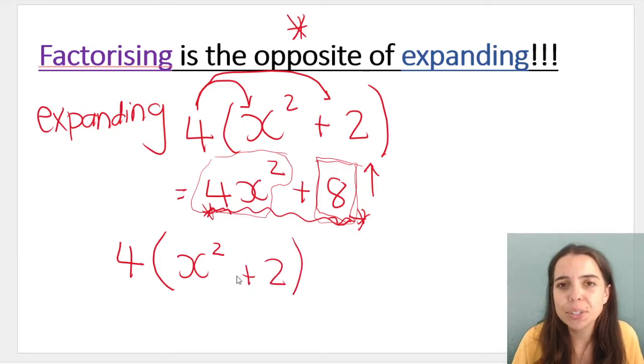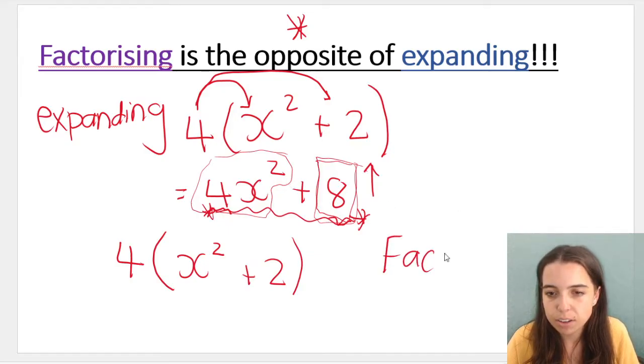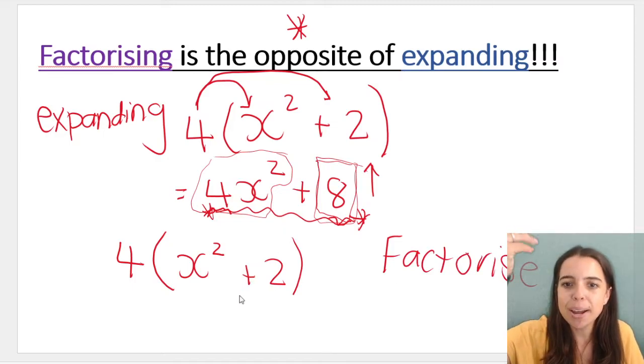If you guys look at what we just did, we literally went backwards. So expanding, we multiplied into these brackets to produce 4x squared plus 8. When I factorized, and in this case I took out a highest common factor, that's all I did, I went backwards. So I end up back at my question.